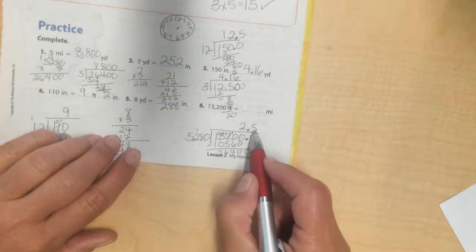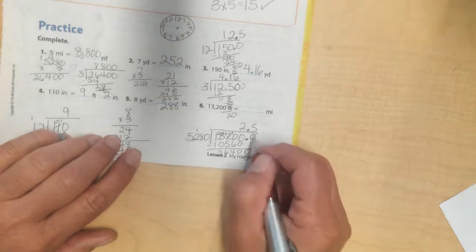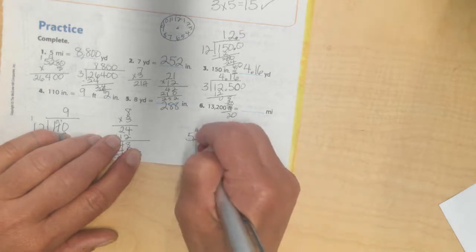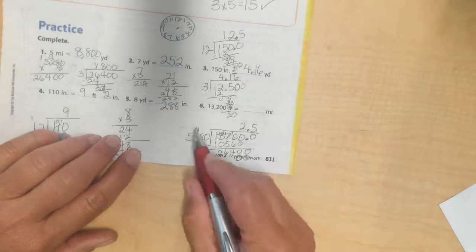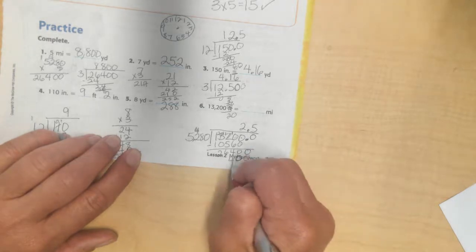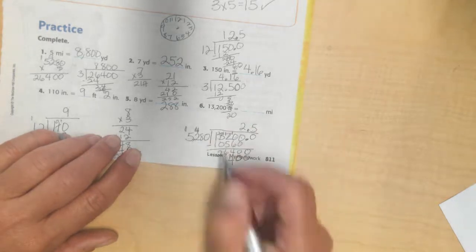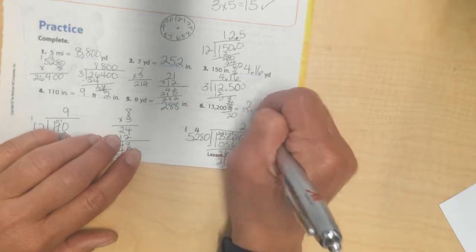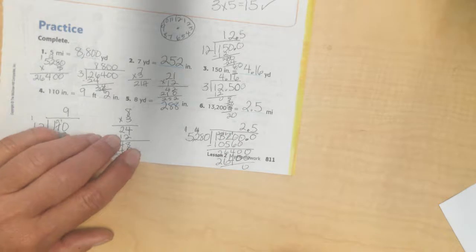And see if that works. 5 times 0 is 0. 5 times 8 is 40. Carry my 4. I'll turn my 1 into a 4. 5 times 2 is 10 plus 4 is 14. Carry my 1. 5 times 5 is 25. Plus 1 is 26. I subtract. I get 0. Final answer is 2.5 miles.